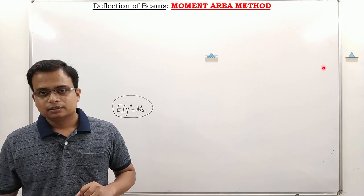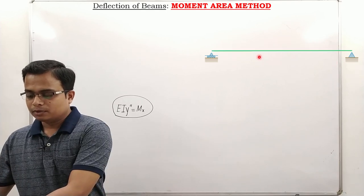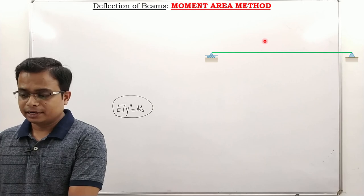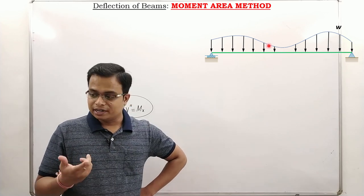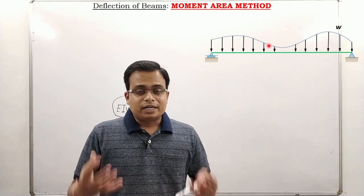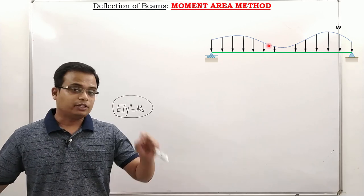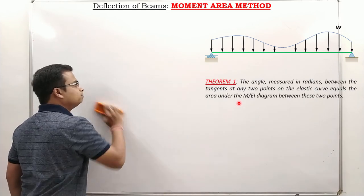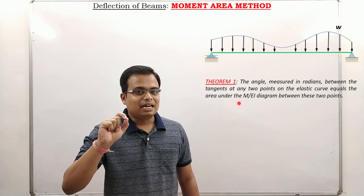Let's jump right into Theorem 1. Consider a beam with a roller support and a hinge support, and some kind of loading — it could be uniformly varying, concentrated, or uniformly distributed. We need to be able to find slope and deflection at any given point. Theorem 1 is trying to convey something about the angle between tangents — specifically the angle subtended between two tangents on the elastic curve.